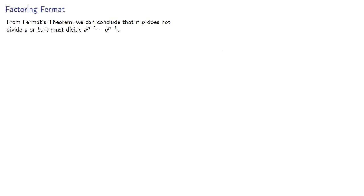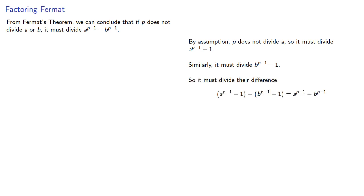From Fermat's theorem, we can conclude that if p does not divide a or b, it must divide a to the p minus 1, minus b to the p minus 1. Again, by assumption p does not divide a, so it must divide a to the p minus 1, minus 1. That's Fermat's theorem. Similarly, it must also divide b to the p minus 1, minus 1, so it must divide their difference.